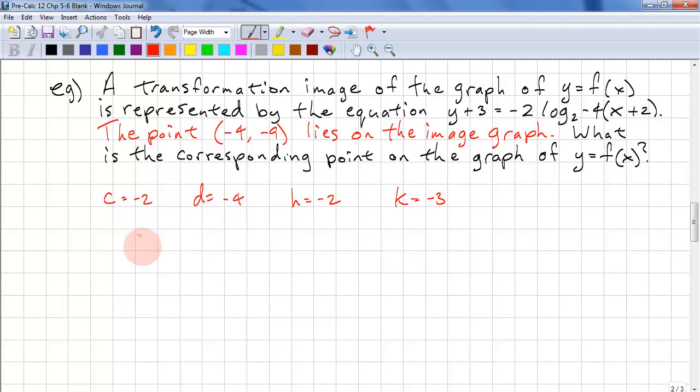You can recall that the pre-image equals d times the image minus h. If you can't remember this, you can use the formula x_p over d plus h equals x_i, and then solve for x_p. This is a two-step algebra process.